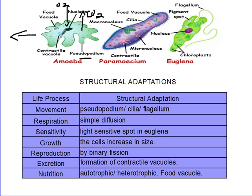The contractile vacuole moves to the cell membrane, creates a hole, and the waste is expelled. Remember, we as humans have kidneys and lungs to help us get rid of metabolic waste. For unicellular organisms, they form contractile vacuoles which help in getting rid of waste.